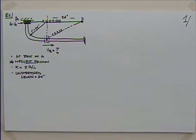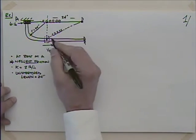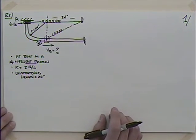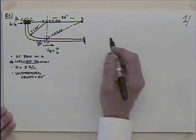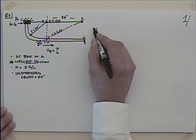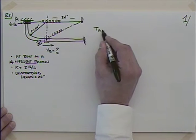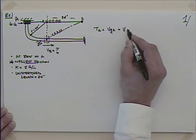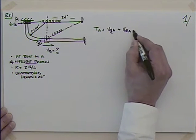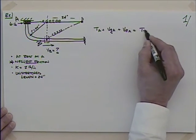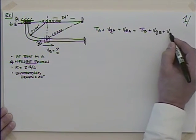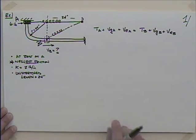I'm going to take point A up here and point B down there. So I can say that the kinetic energy at A plus the potential energy at A plus the spring energy at A is going to equal the kinetic energy at B plus the potential energy at B plus the spring energy at B.